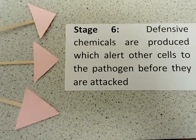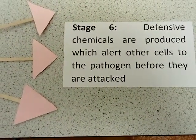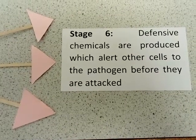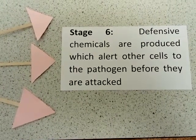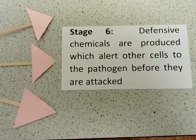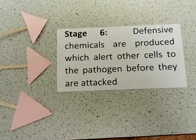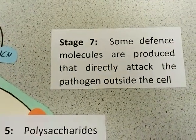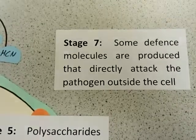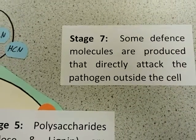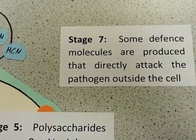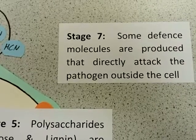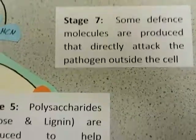At the same time, other defensive chemicals are produced that alert other cells nearby to the fact that the plant has been infected. And some plants produce molecules that directly attack the pathogens outside of the cell.